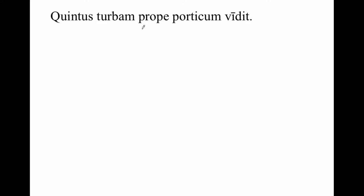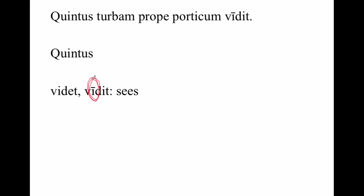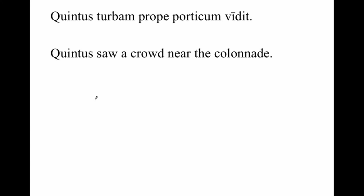Quintus — look at this. Here's the dictionary entry of the verb 'to see.' You notice this is a very subtle difference. Sometimes the perfect looks very different. In this case, the only difference between the present tense and the perfect tense is that the root of the present tense is a short I — 'videt' — but the root of the perfect tense is a long I — 'vidit.' Quintus saw a crowd near the colonnade.